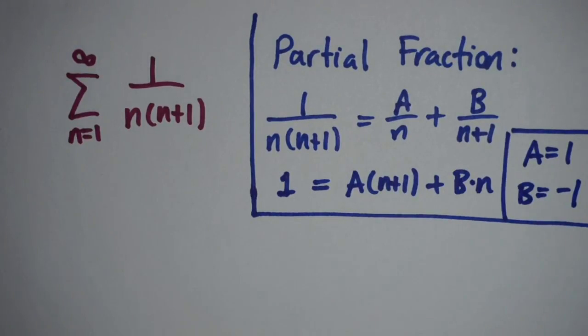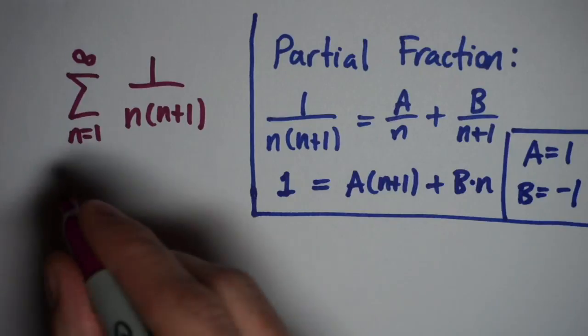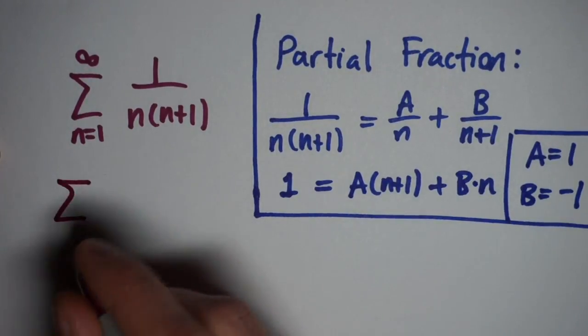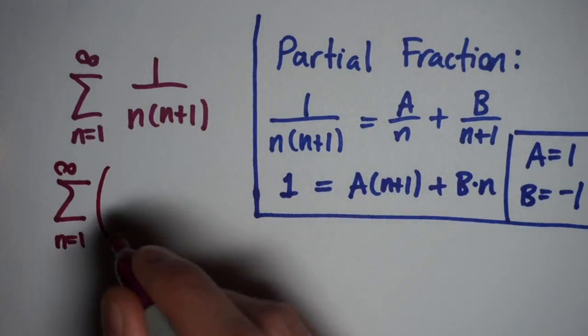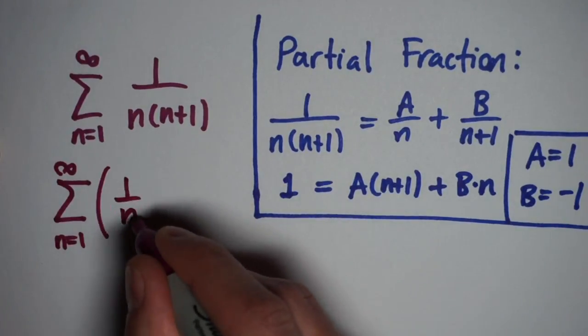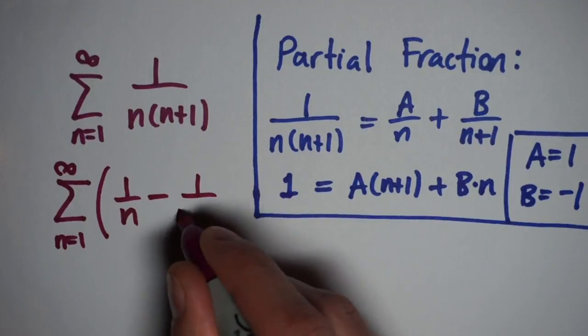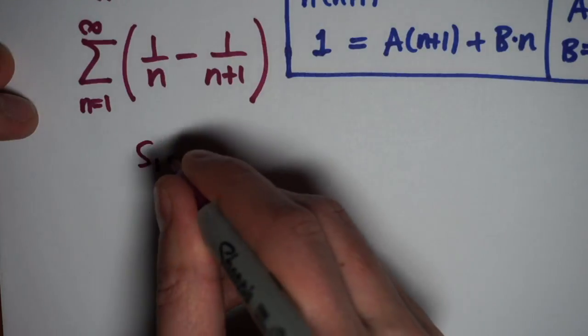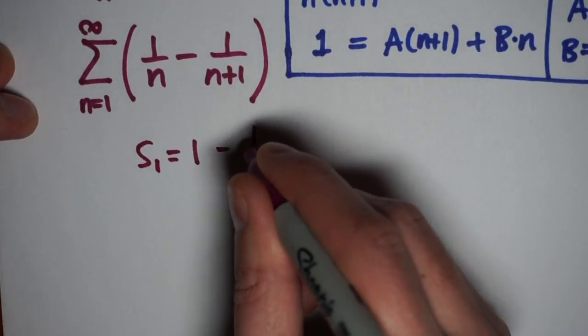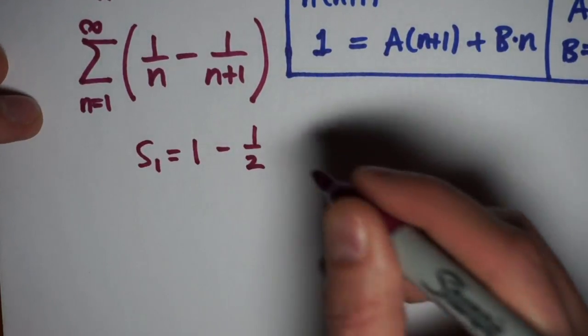Okay, so if I rewrite the series this way, I'm going to end up with the sum from one to infinity of one over n minus one over n plus one. And when a series turns out something like this, this is called telescoping, because as you'll see, the partial sums have a very nice property.